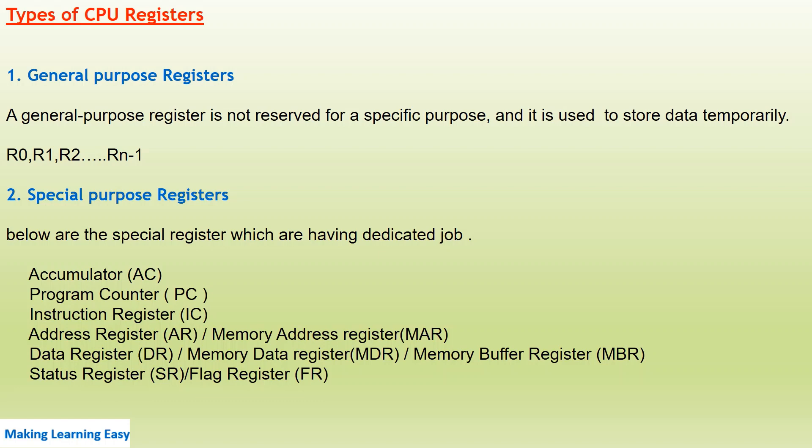Special purpose registers have a particular or dedicated job. The types of special purpose registers are: accumulator, program counter, instruction register, address register (also known as memory address register), data register (also known as memory data register or memory buffer register), and status register (also known as flag register).